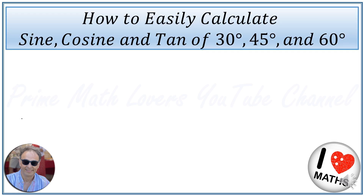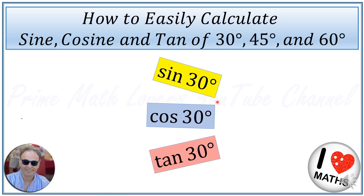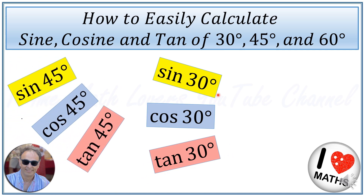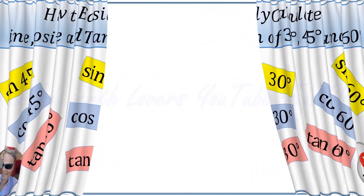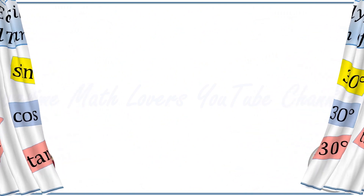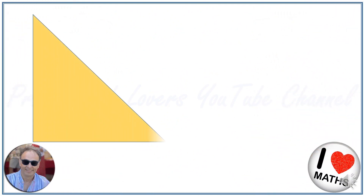Hello my friends, welcome to the Prime Math Lovers YouTube channel. In this video I'm going to delve into a fundamental aspect of trigonometry: how to easily calculate and remember the exact values of sine, cosine and tangent for the angles 30, 45 and 60 degrees. Let's start with the right angle triangle with equal legs of one.